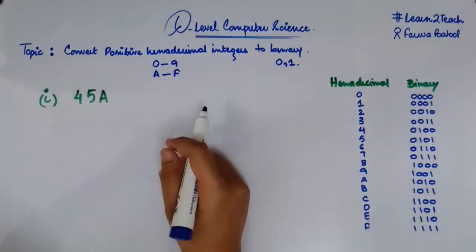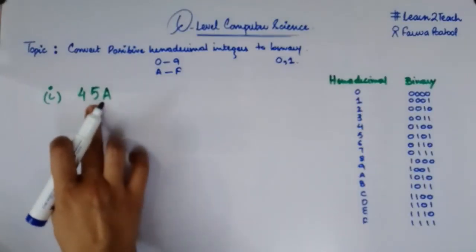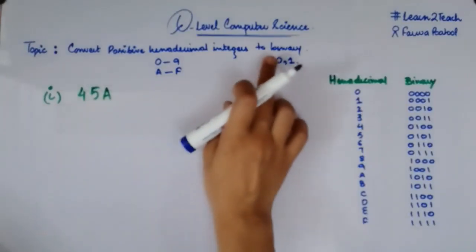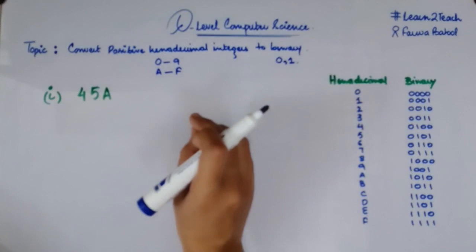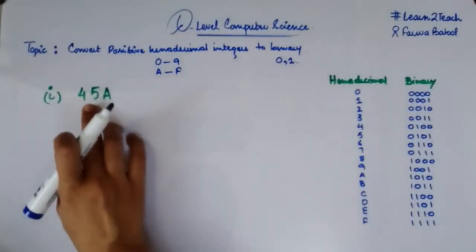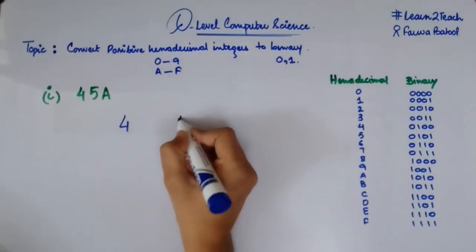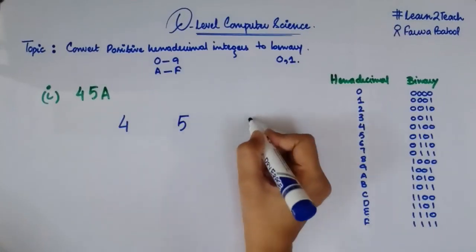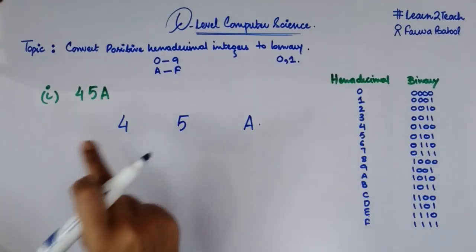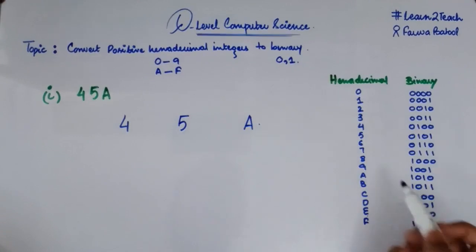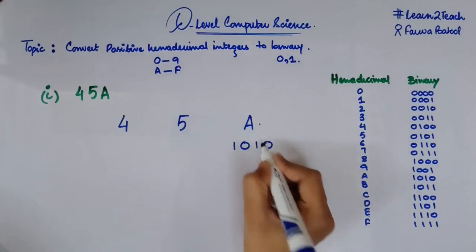Here I have a hexadecimal number 45A and I need to convert it into binary. This is very simple — I just need to find the binary values of each individual digit using the conversion table. Starting with A: A equals 1010 in binary.